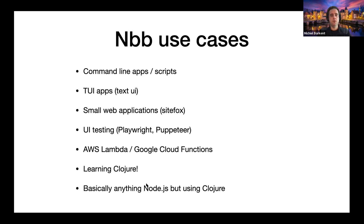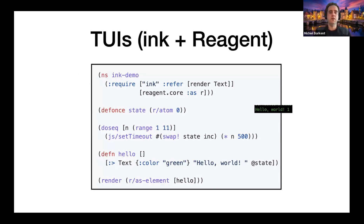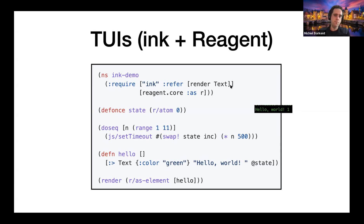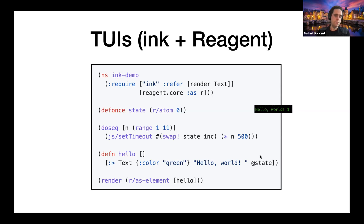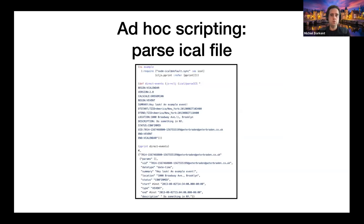Here's an example of a text UI program using Ink — an npm library for writing React-based text UIs. We require this library, and that's why Reagent is bundled with NBB: so we can use it to write nice text UI programs. You can see 'Hello World 1', because we render 'Hello World' and have some state where that number 1 comes from. So yes, you can do that with NBB.